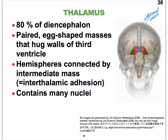Where does the third ventricle sit? The third ventricle sits right in between these two hemispheres. That means that in this third ventricle, there needs to be a hole through which that intermediate mass can pass.